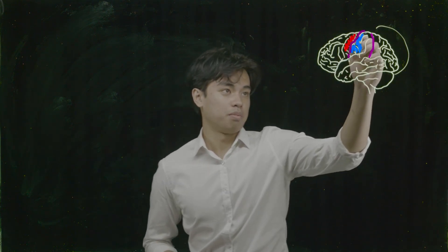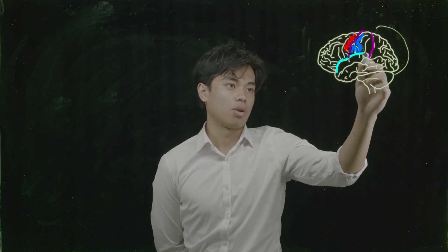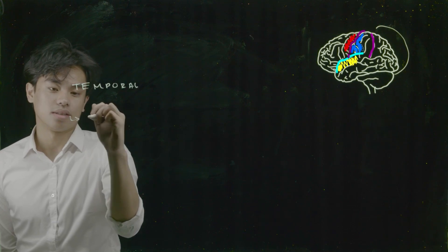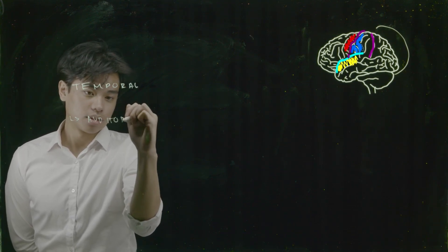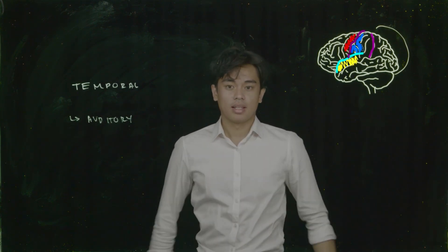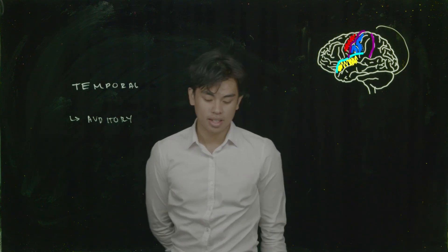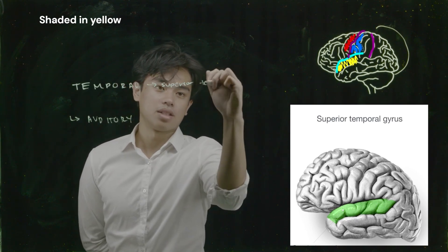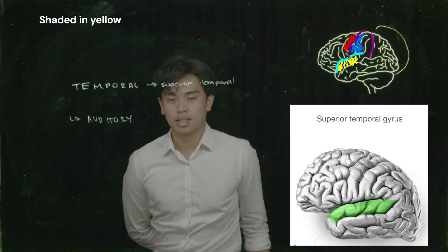The last surface anatomy lobe is the temporal lobe, represented by our thumb. The temporal lobe is split from the parietal and frontal lobe at the lateral sulcus, also known as the sylvian fissure — a very important sulcus. The temporal lobe is responsible for our ability to hear. Looking at our brain anatomy, it looks like the ears of our brain. It contains the superior temporal gyrus, which houses the auditory cortex.